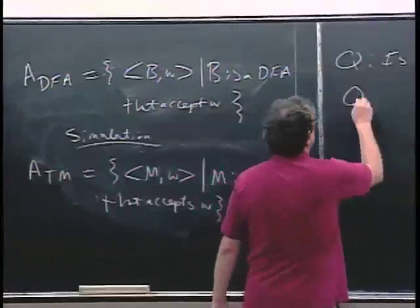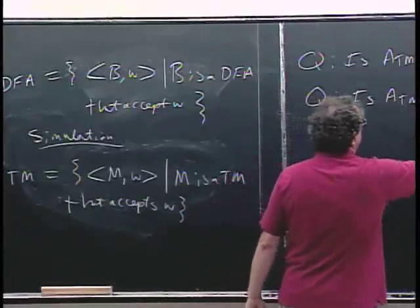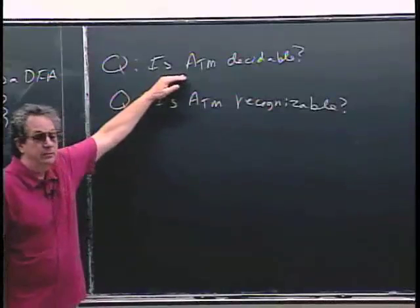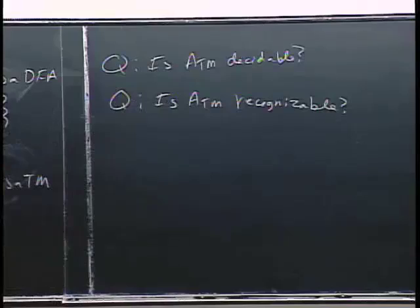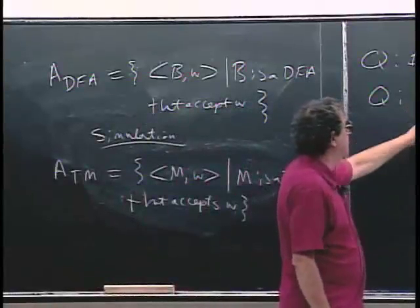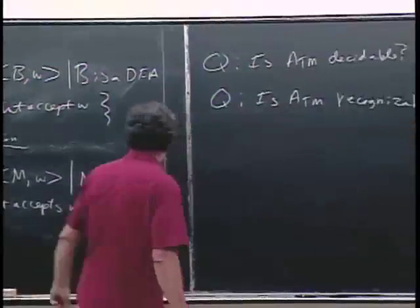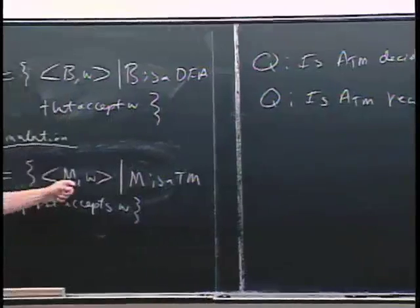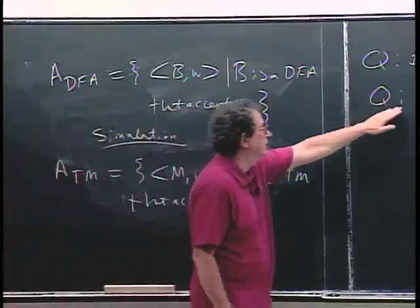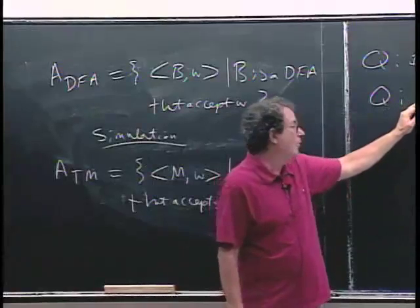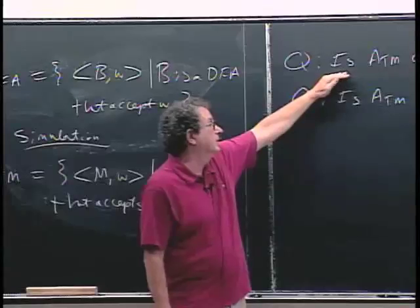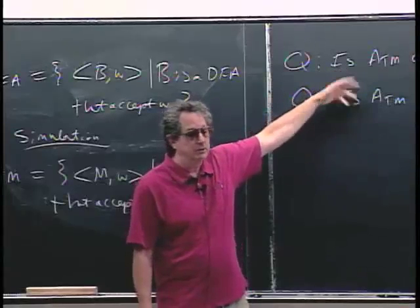Another question: is ATM recognizable? Decidable means there has to be a Turing machine that can take in M and W and either accept or reject. Recognizable is an easier condition — there has to be a Turing machine which will accept if M does accept W. But if M doesn't accept W, the Turing machine could reject or it could just go forever. Whereas in the decider, it always has to either accept or reject on any input — it can't just spin its wheels forever.